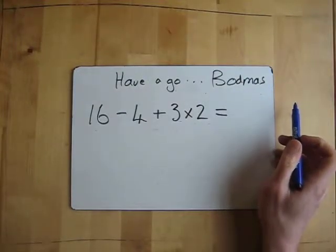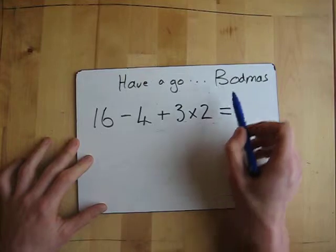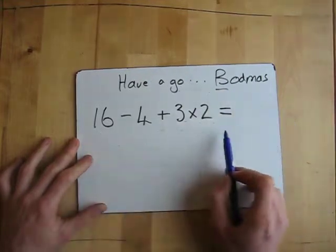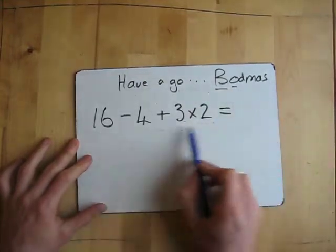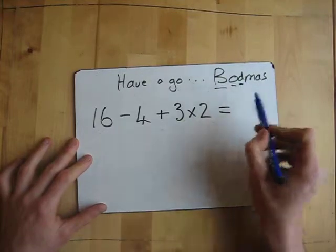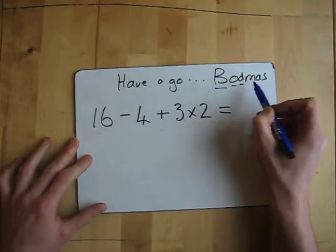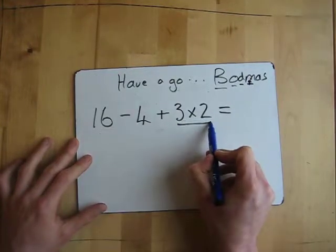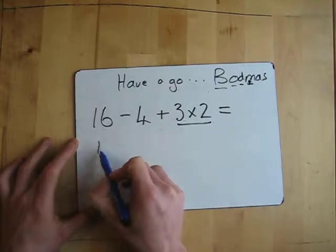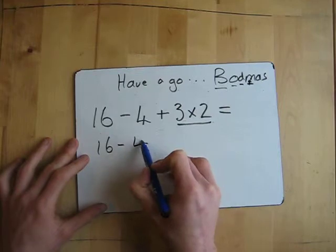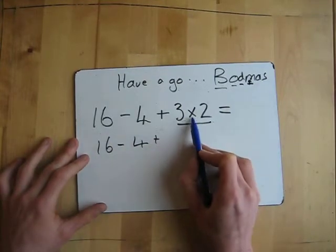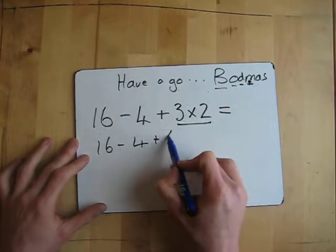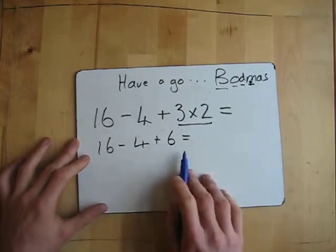Three, two, one. Right. So I look, have I got any brackets? No brackets. Any order? No order. Any divides? No divides. But I've got a multiply here, which is this equation here. So I'm going to have 16 take away 4, add, and then 3 times 2, which is 6. So I'm whittling it down.